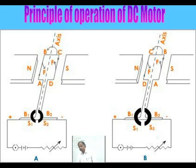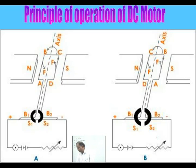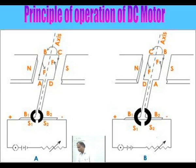There is a key used as an on-off switch and a resistance for limiting current to the motor. In figure A, the positive terminal of the battery is connected to brush B1 and the negative through the resistor to B2. Current enters at point A, goes from A to B, B to C, C to D, and from D returns to B2.